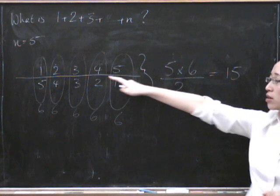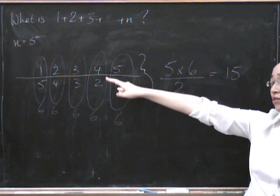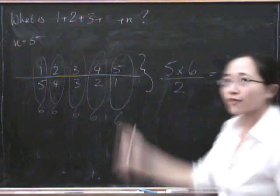So let's check it's true. 1 add 2 is 3, 3 add 3 is 6, 6 add 4 is 10, 10 add 5 is 15. Phew.